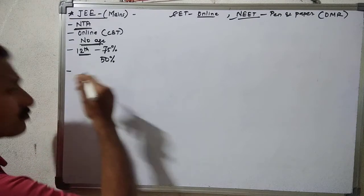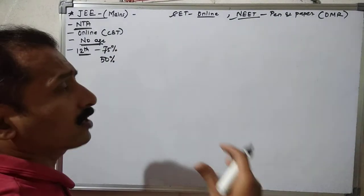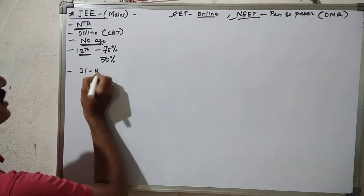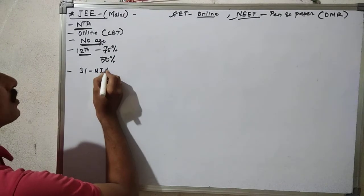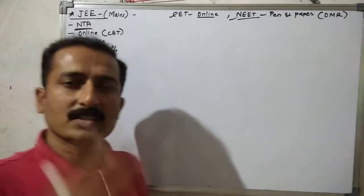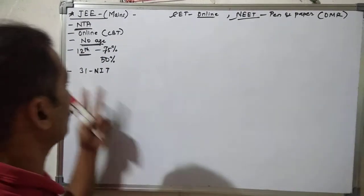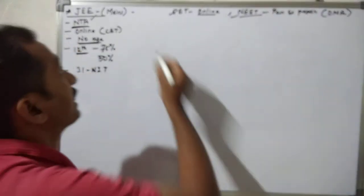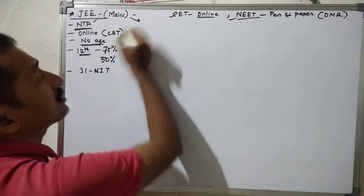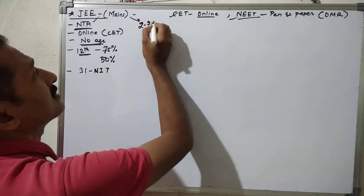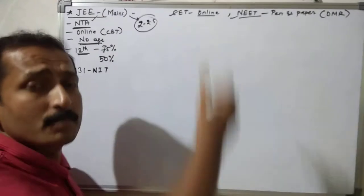JEE Main is generally conducted for taking admission to around 31 NITs — National Institutes of Technology — in India. These are the top 31 NITs in the country. From the students who pass JEE Main, only the top 2 lakh students are selected to appear for JEE Advanced.